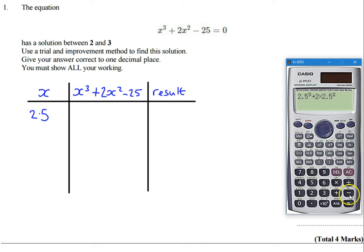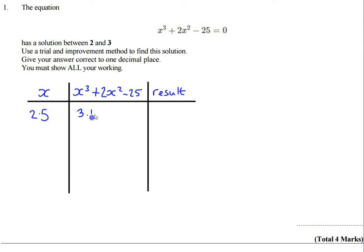Take away 25 and we're going to see what that gives us and that gives us 3.125. I'm going to put 3.125 in here.